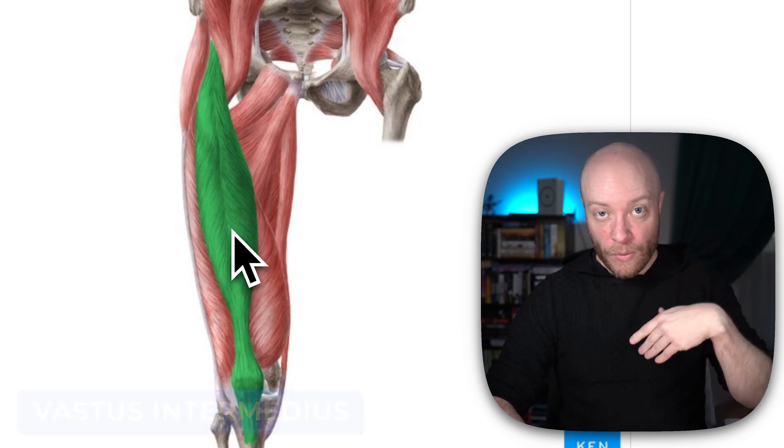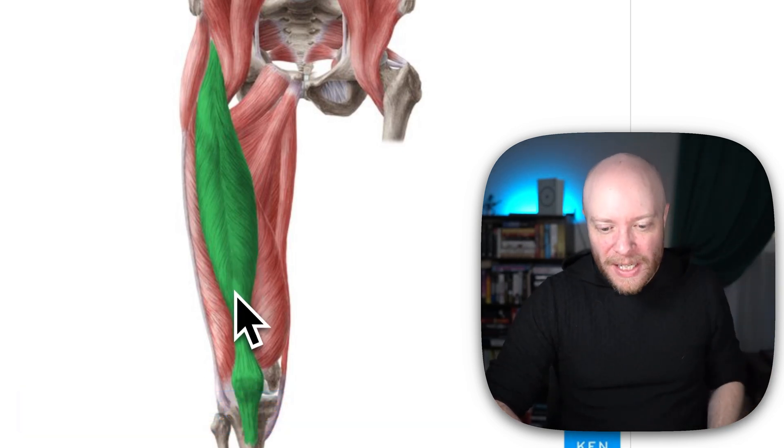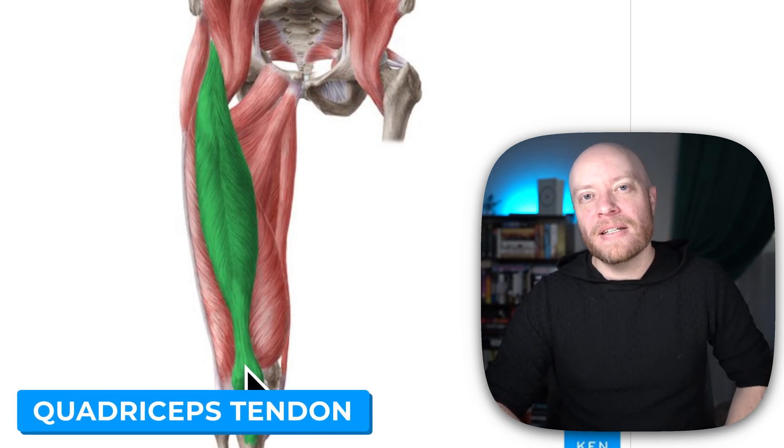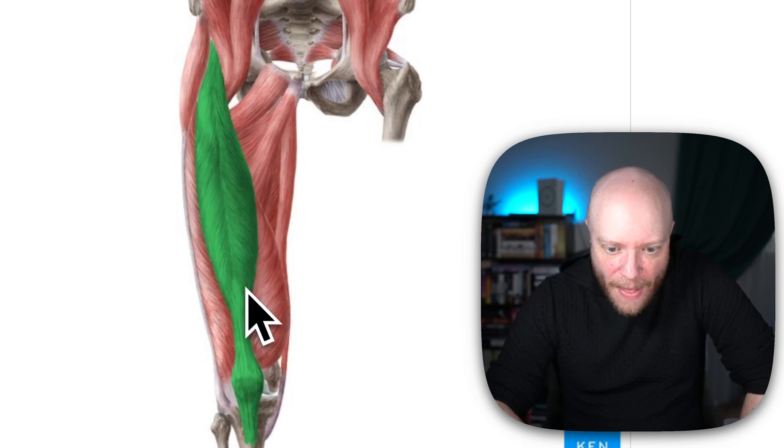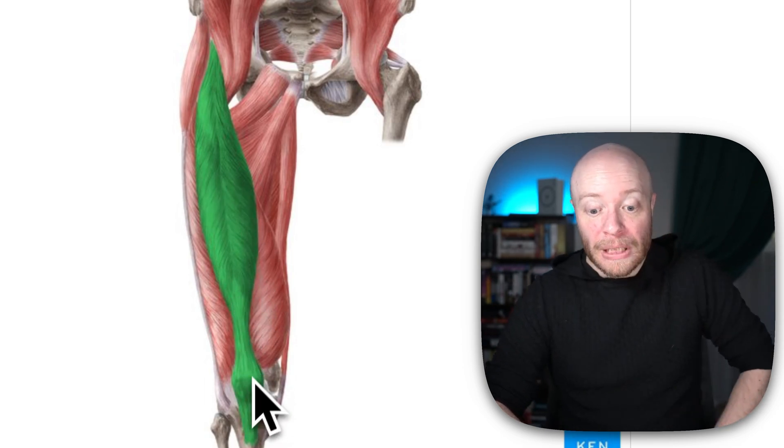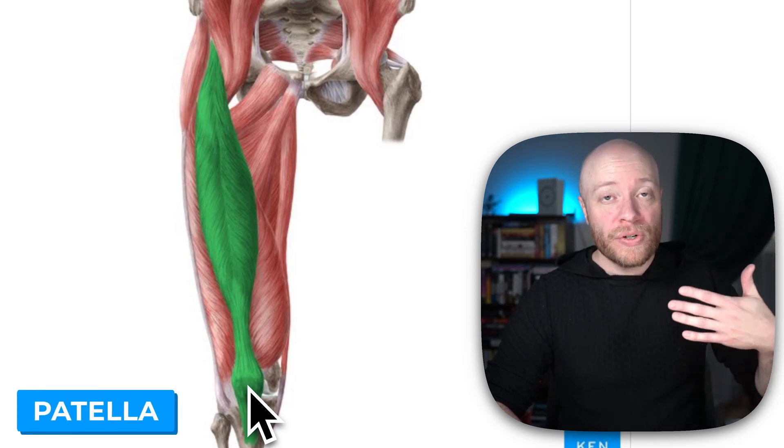But all of them, or the reason why they are one muscle is because they all share a common tendon called the quadriceps tendon. And that's exactly what you can see here with the rectus femoris. You can see the muscle belly and then it's transitioning into this tendon. And that tendon is then blending into the patella or your kneecap.